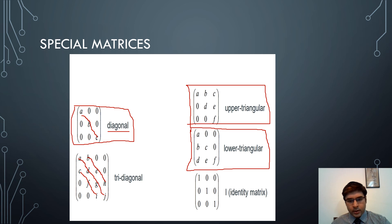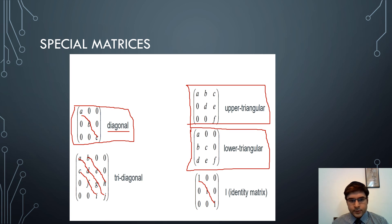The identity matrix is a square matrix that has all elements as zero except for the diagonal elements, which are all equal to one. So all diagonal elements are 1 and all other elements are 0. A square matrix means the number of rows is equal to the number of columns, and an identity matrix must be a square matrix.